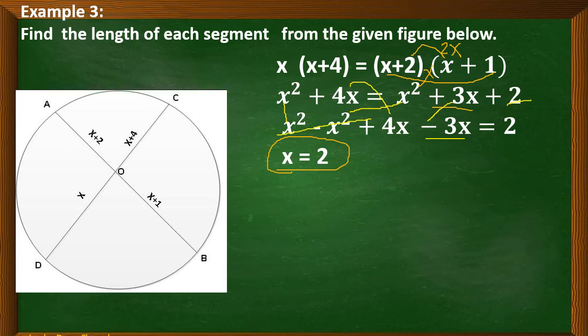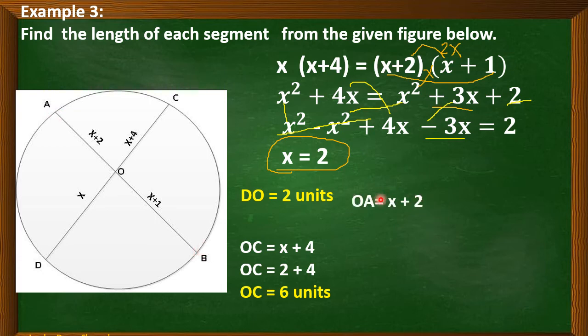So now, we have to determine the measurement of each segment. For line segment DO, since it is represented by X, that is equal to 2. For OC, represented by X plus 4, we will substitute X by 2. So we have 2 plus 4. So therefore, our line segment OC is equal to 6. Now for OA, represented by X plus 2, substitute X by 2 plus 2. So therefore, OA is equal to 4.